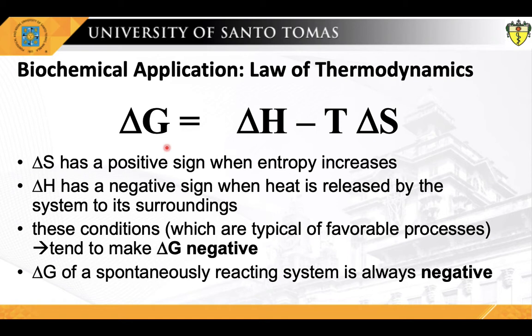All chemical reactions are influenced by two forces: the tendency to achieve the most stable bonding state, for which enthalpy H is a useful expression, and the tendency to achieve the highest degree of randomness, expressed as entropy S. The net driving force in a reaction is delta G, the free energy change, which represents the net effect of these two factors. Delta S has a positive sign when entropy increases, and delta H has a negative sign when heat is released by the system to its surroundings. Either of these conditions, typical of favorable processes, tend to make delta G negative. The delta G of a spontaneously reacting system is always negative. The units of delta G and delta H are joules per mole or calories per mole, while the units of entropy are joules per mole kelvin.